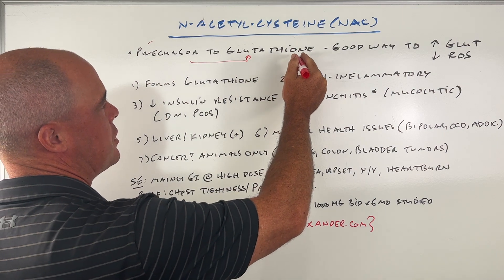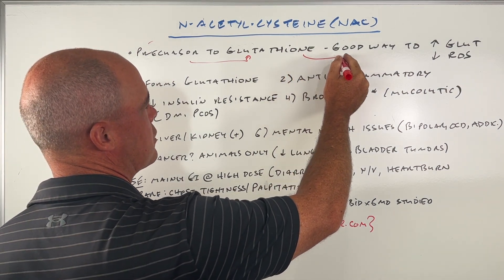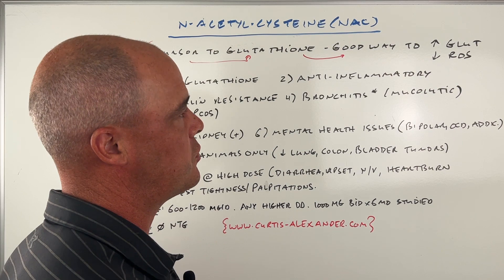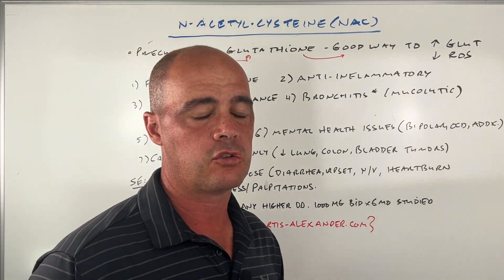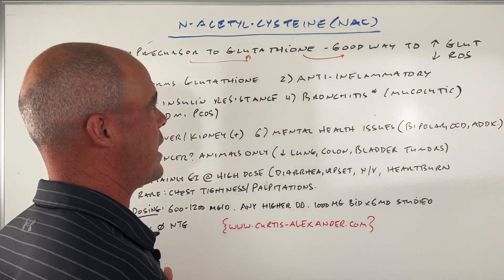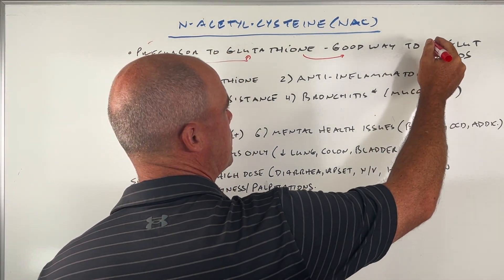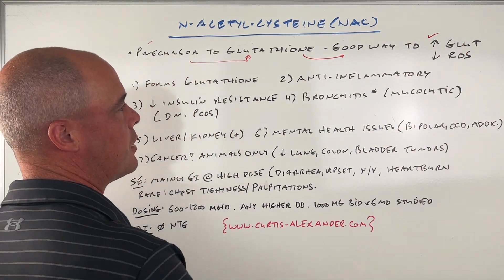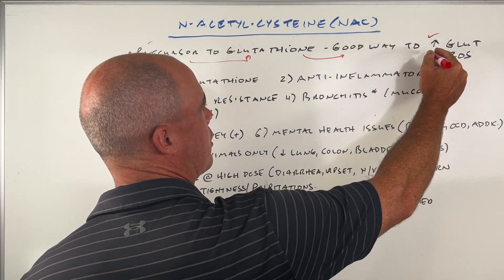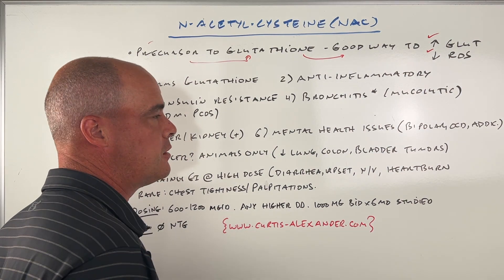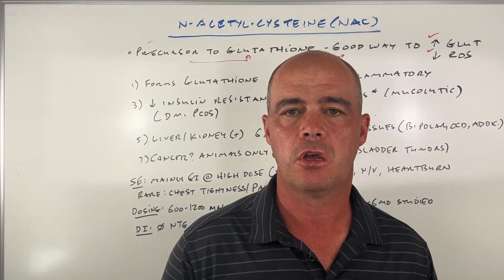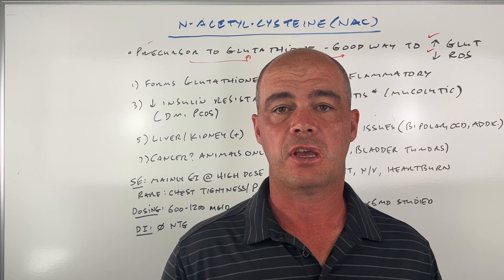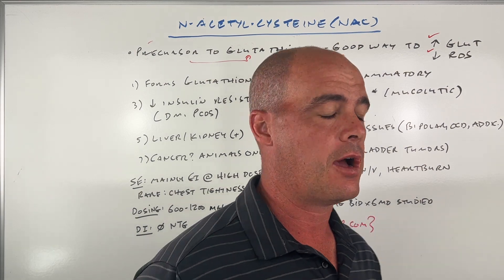So obviously in theory, increasing the amounts of a master antioxidant like that is going to have some benefits, and that is kind of what we see. With NAC, we're going to be able to increase glutathione levels and we're also going to see reactive oxidative species go down in our body. So essentially it's acting as an antioxidant.